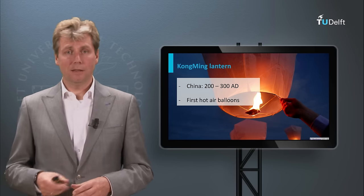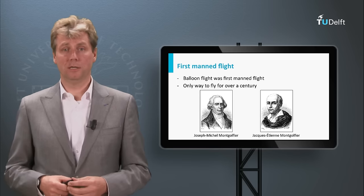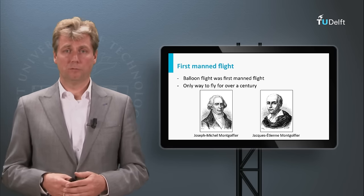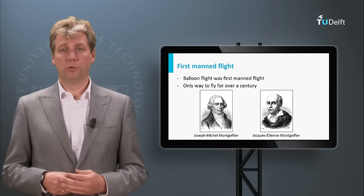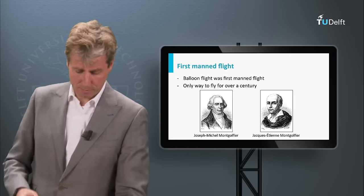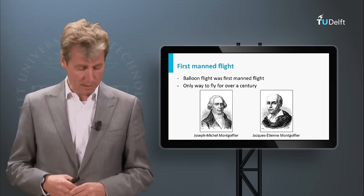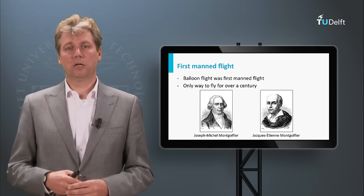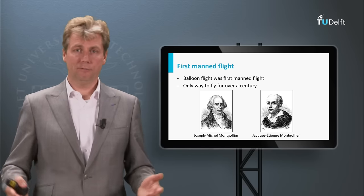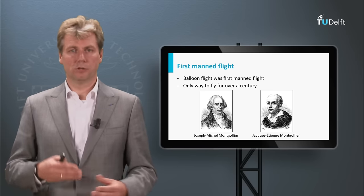But later, much later in the 18th century, this was used for manned flight, and here we are still 120 years before the 20th century, so well before the Wright brothers. There were two other brothers, the Montgolfier brothers. Surprising that in both cases it were brothers. And they are also two sides of a character which together work really well — one of them very creative with many ideas, and the other one more orderly and structured, trying to see whether it was really possible and calculated. And this combination often works very well.